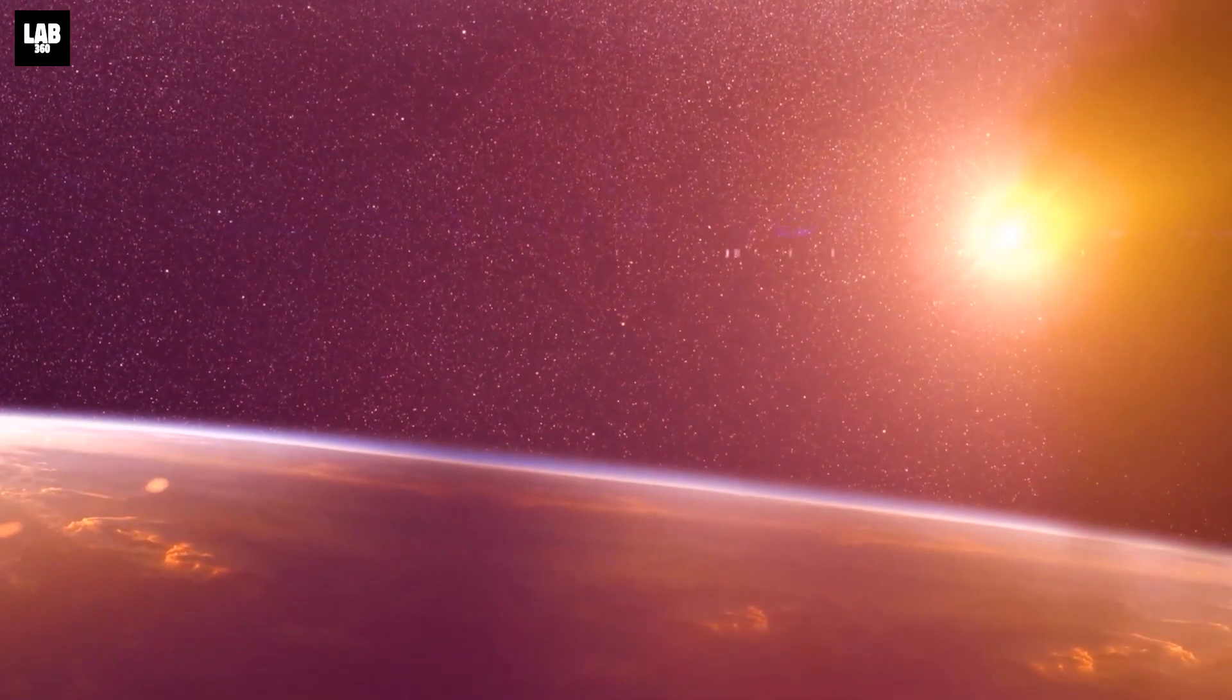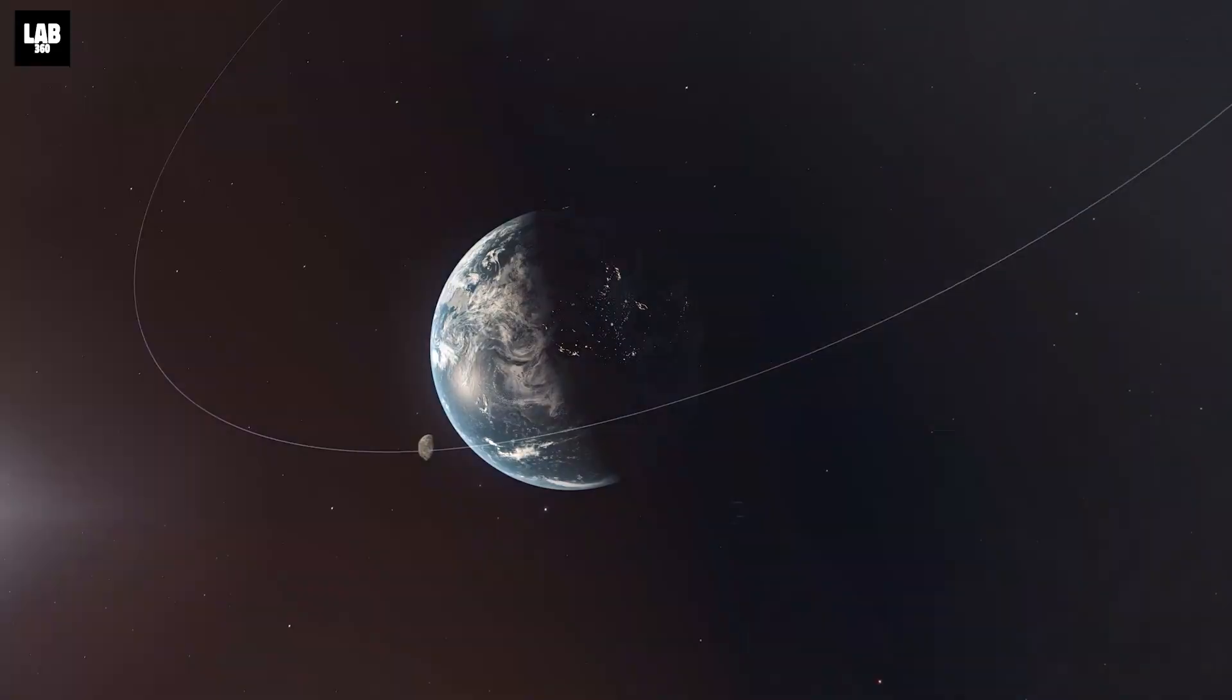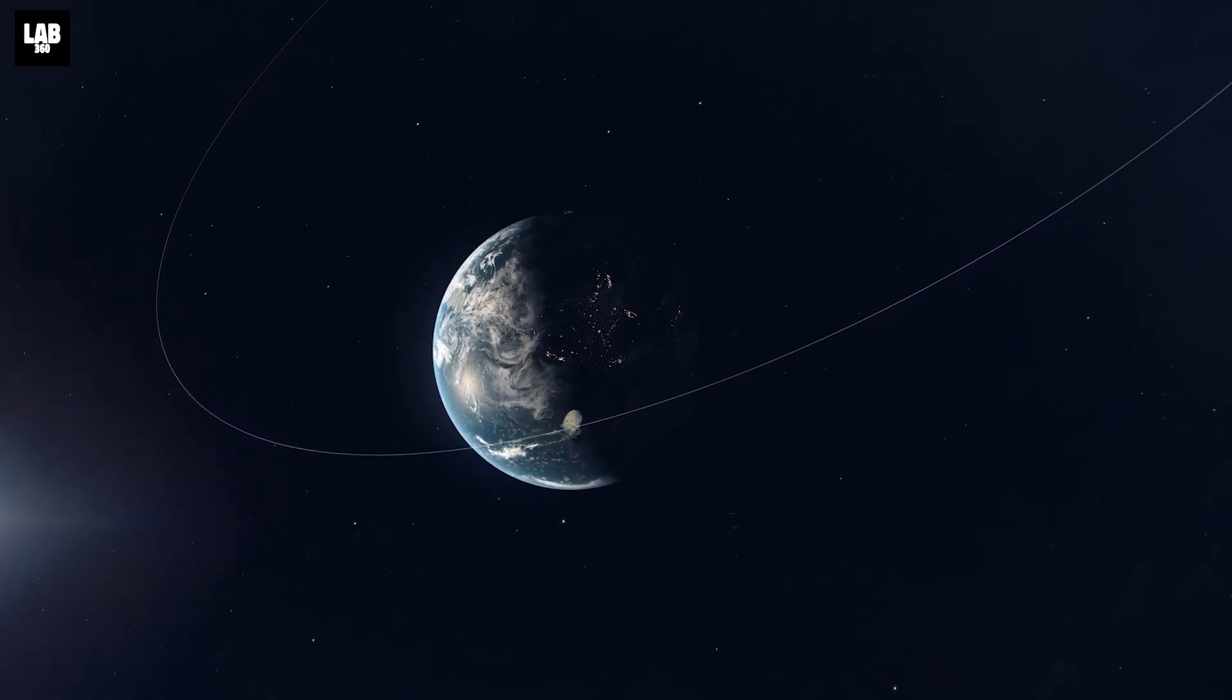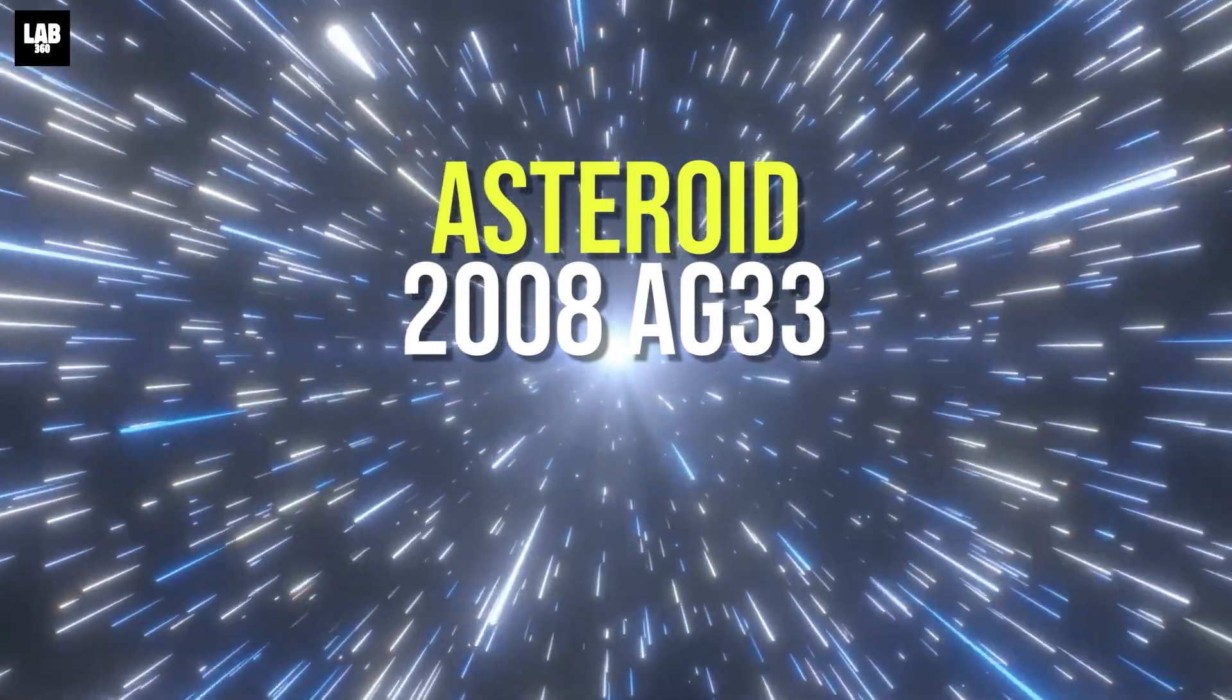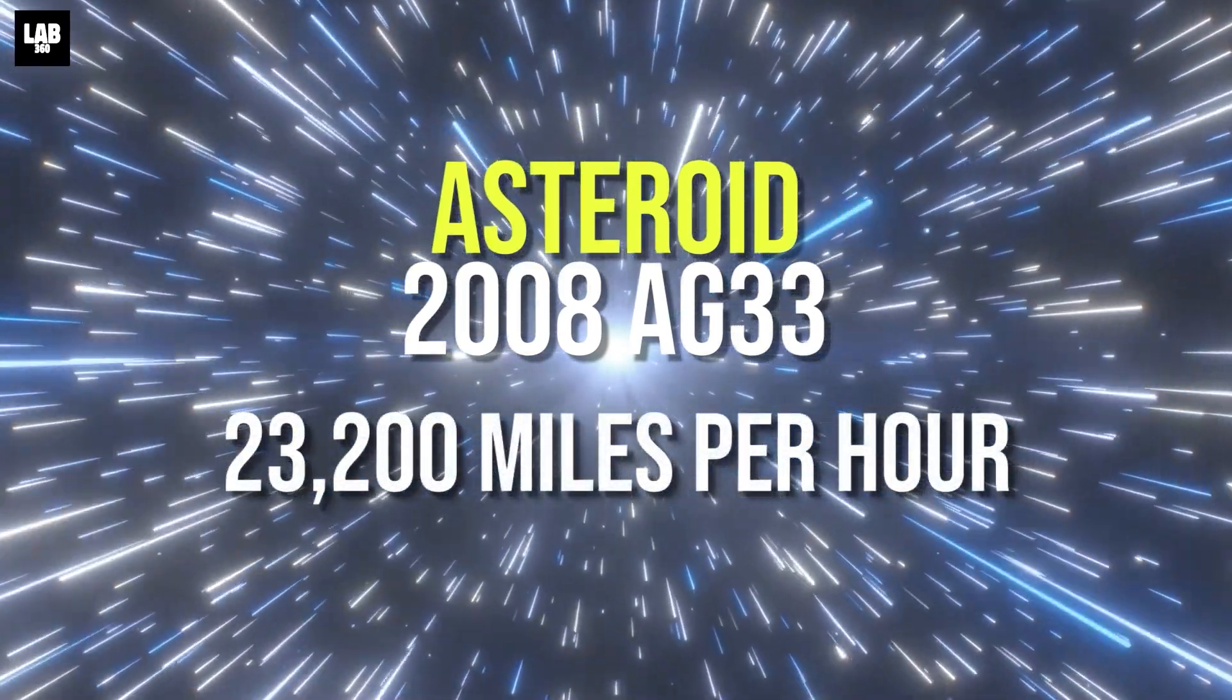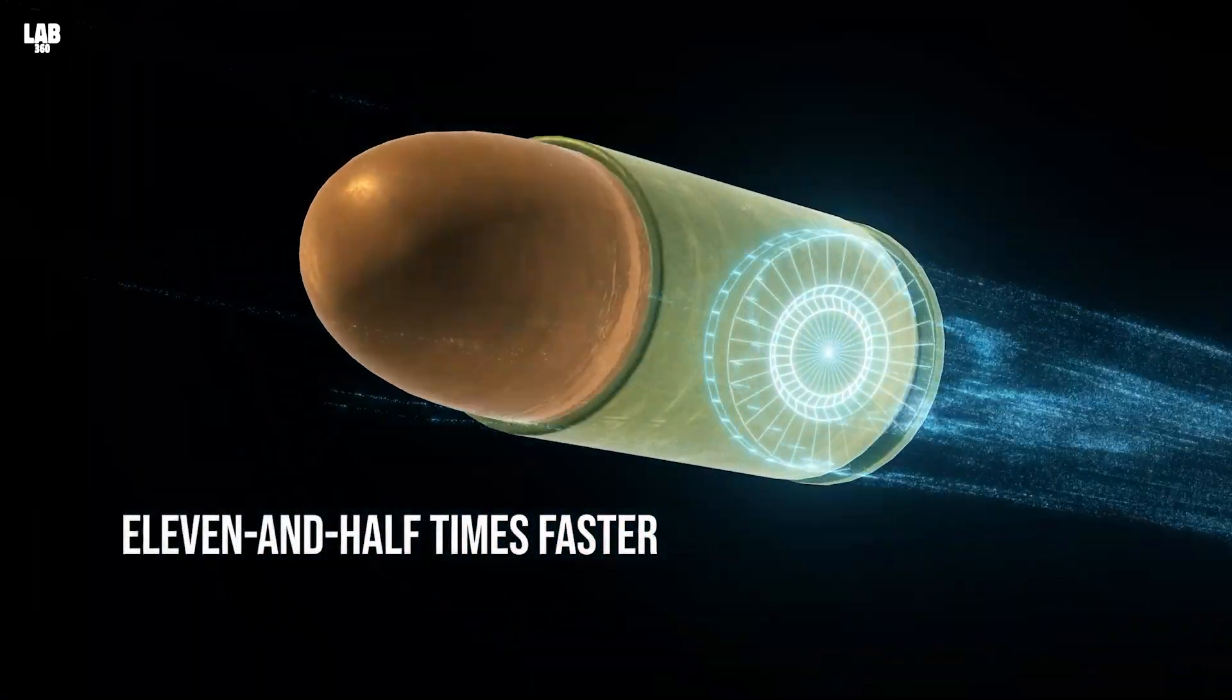Aside from its huge size, the space rock is also traveling at staggering speeds. Figures show that at the time of its close approach, 2008 AG 33 will be moving at roughly 23,200 miles per hour. This is roughly 11 and a half times faster than a rifle bullet.